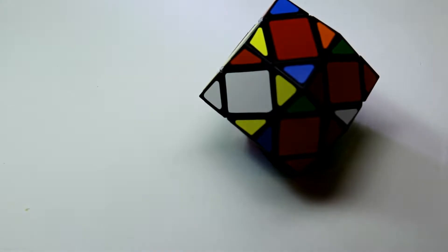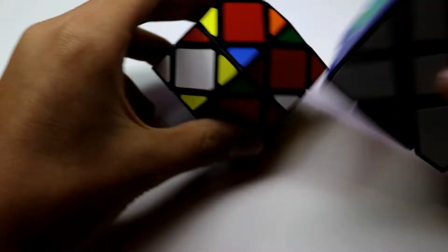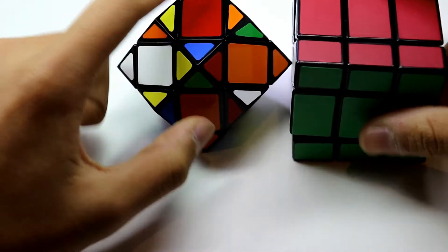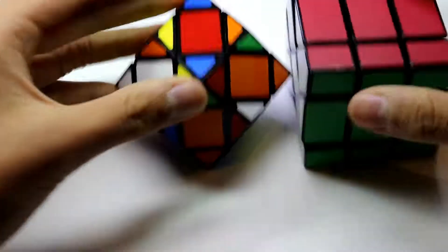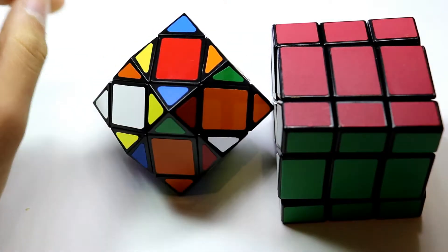It also has a similar concept to a fisher cube, because if you can see, these edge pieces are like longer, so they don't have two colors, they only have one color.